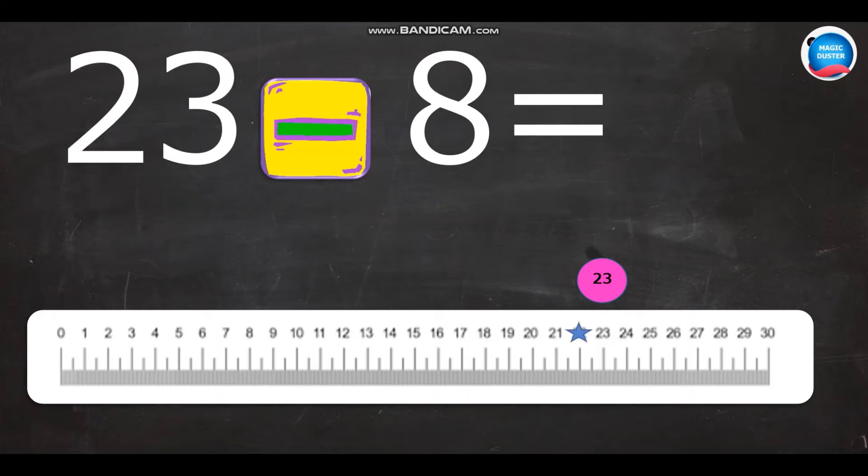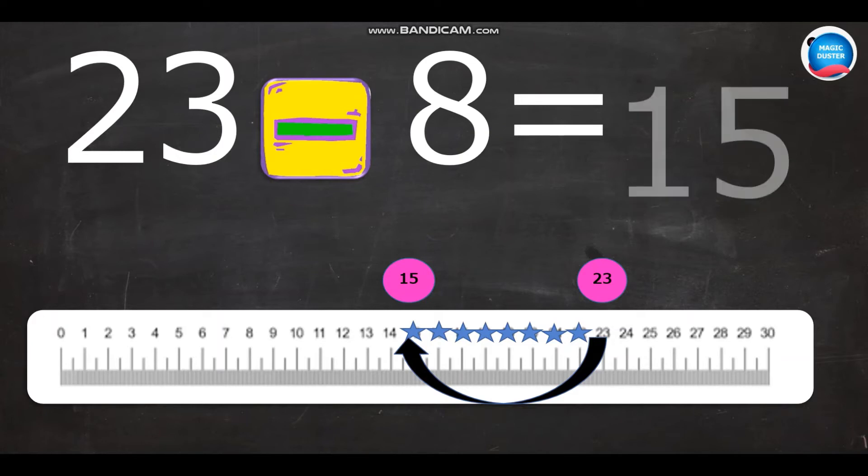1, 2, 3, 4, 5, 6, 7, and 8. Yes, so I jump here to number 15. This one is easy to do, right? When you are doing number line subtraction, we have to count in the reverse order to find the answer. So, what is 8 subtracted from 23? Yes, that is 15.